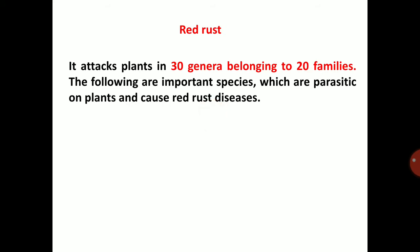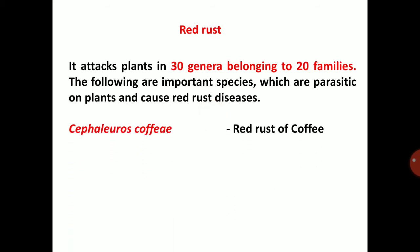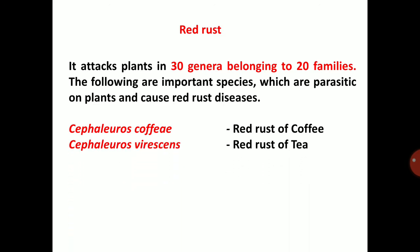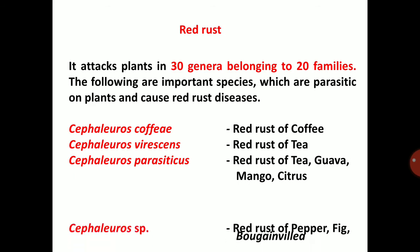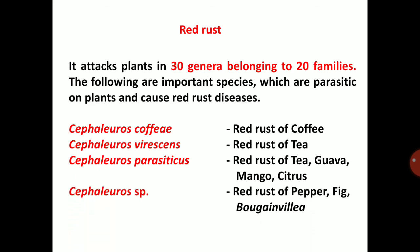The following are important Cephaleuros species parasitic on plants causing red rust diseases: Cephaleuros coffeae causes red rust of coffee; Cephaleuros virescens causes red rust of tea; Cephaleuros parasiticus causes red rust of tea, guava, mango, citrus etc.; Cephaleuros species cause red rust of pepper, fig and bougainvillea.